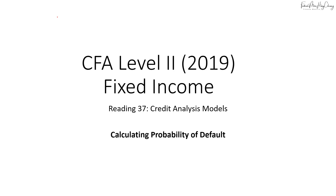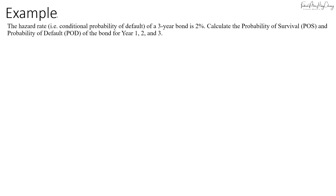Normally in the question they will give you the hazard rate, or the conditional probability of default. In this case, the hazard rate of a three-year bond is two percent per year. Let's calculate the probability of survival and the probability of default for year one, two, and three, treating them all as independent events.